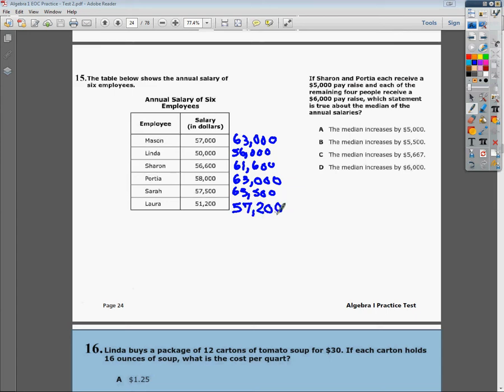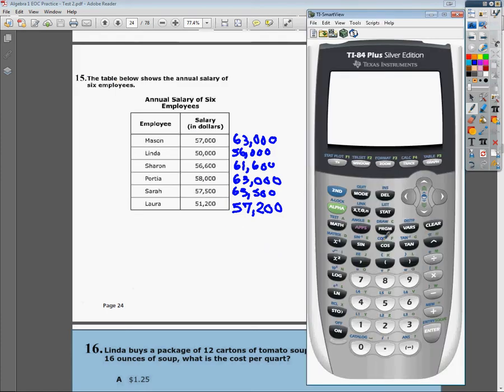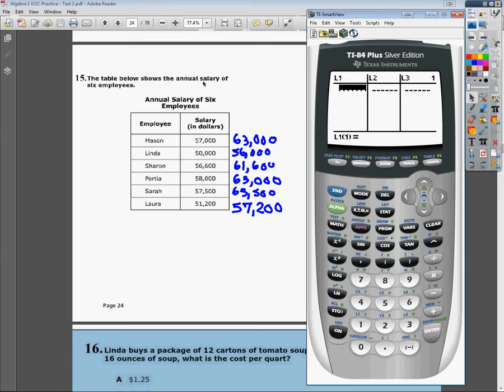Now from here I can make tables. So the first thing I'm going to do, load up the old calculator here, go into the list section, and I'm going to edit a list. I need to make L1 represent the original salaries.